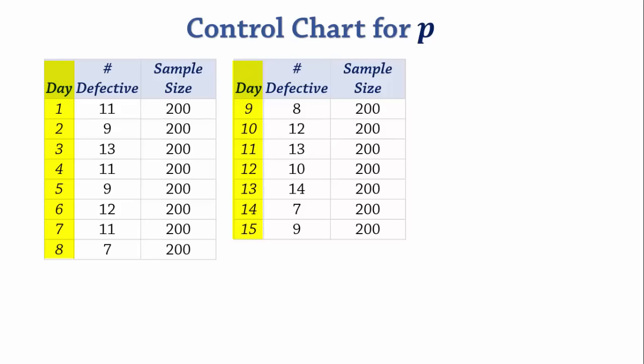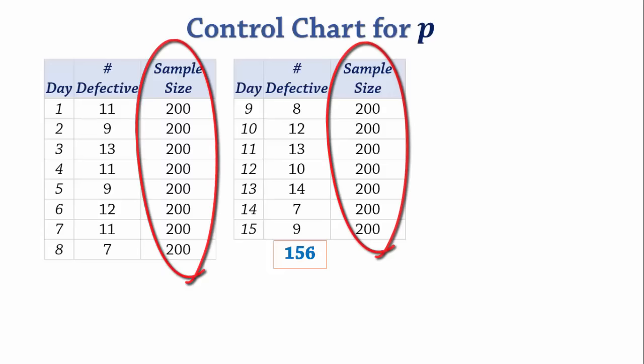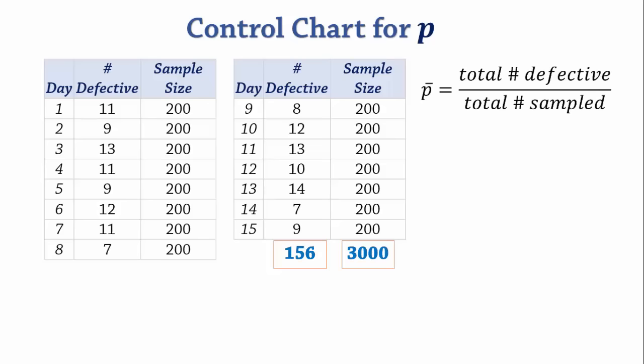The total number of defective items over the 15 days is 156, while the total number of items sampled is 200 times 15, which gives 3000. We calculate p-bar by dividing the total number of defective items by total sample size, and that gives 0.052.